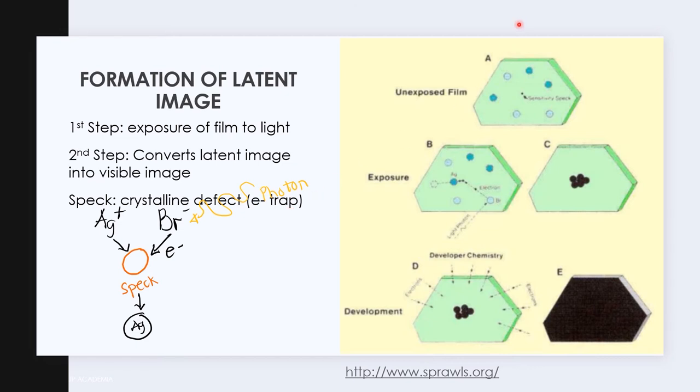The film grains have positive silver ions and negative bromide ions. Light will remove the electron from the bromide ions and electrons move to the sensitivity specks which are just crystalline defects or electron traps.